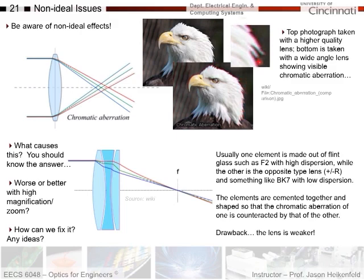If you zoom in, you can see a little bit of color bleeding out of the edges, and that's because of chromatic aberration. What causes this? The index of refraction of a material changes with wavelength of light — that's called optical dispersion. Because of optical dispersion, the focal length of light will change with different wavelengths, because if the refractive index is changing, then you put a different refractive index in the lens maker equation and you get a different focal length.